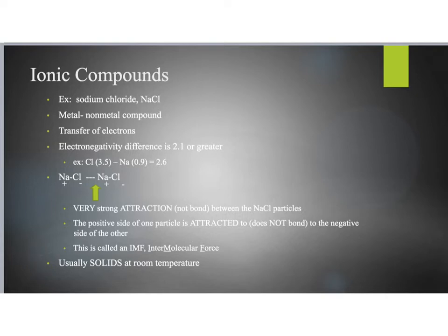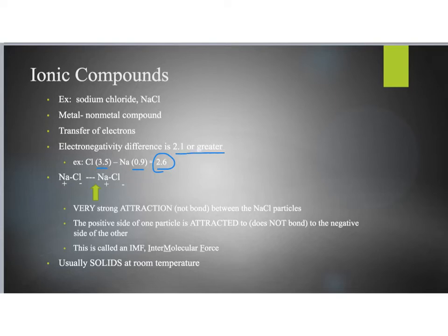For example, we've got sodium chloride. Sodium is our metal, and chlorine is our non-metal. If we look at the electronegativity difference between sodium and chlorine, chlorine has an electronegativity value of 3.5, while sodium has an electronegativity value of only 0.9. So that electronegativity difference is 2.6. And anytime there's an electronegativity difference of 2.1 or greater, we call that an ionic bond.